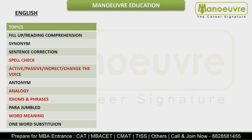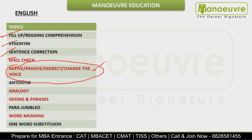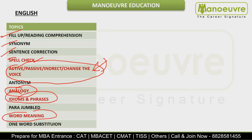In English, the topics that came were: active and passive voice, direct and indirect speech — this was new, so those who haven't studied this topic, please study it now. Spell check also appeared. Analogy-based questions came in good number. Idioms and phrases questions appeared. Word meaning questions came. Fill in the blanks came repeatedly. Reading comprehension was there in some slots but not in others.